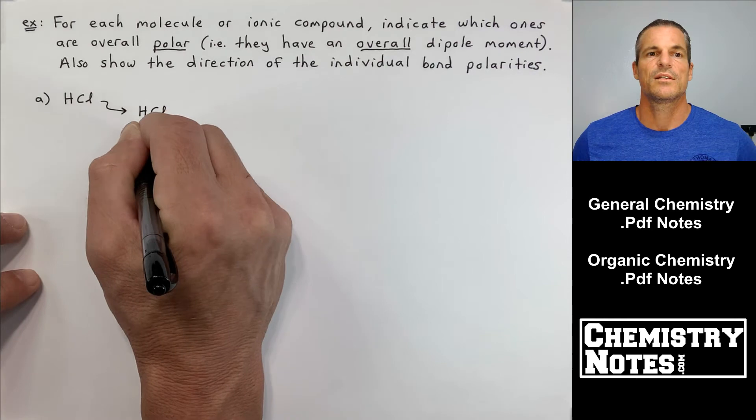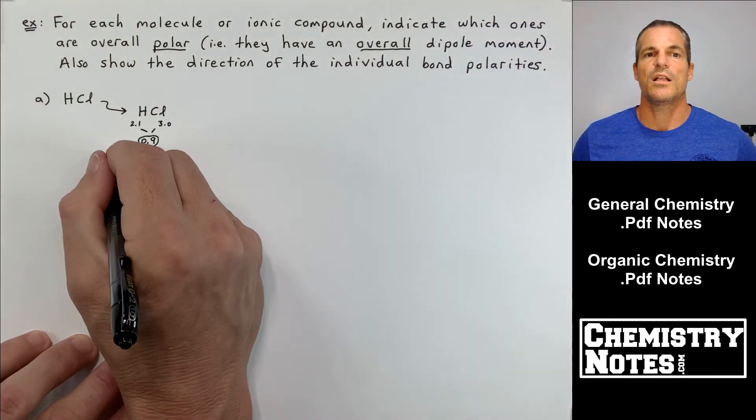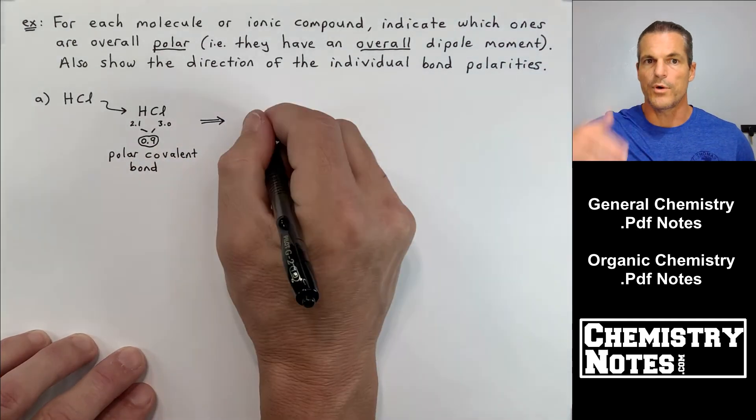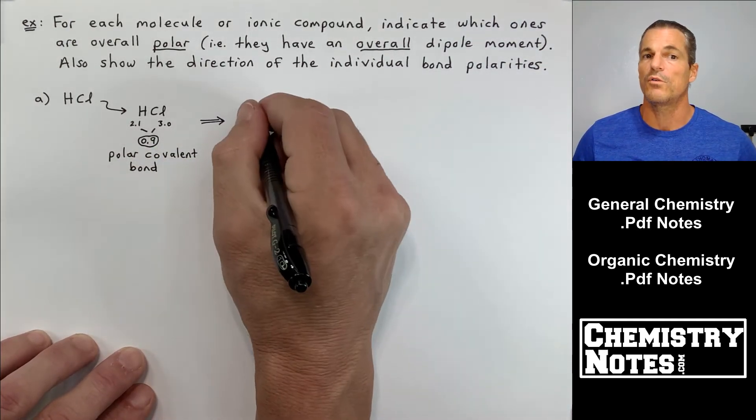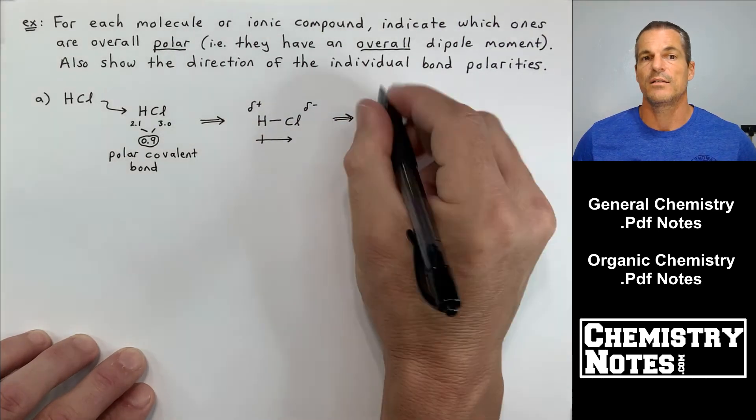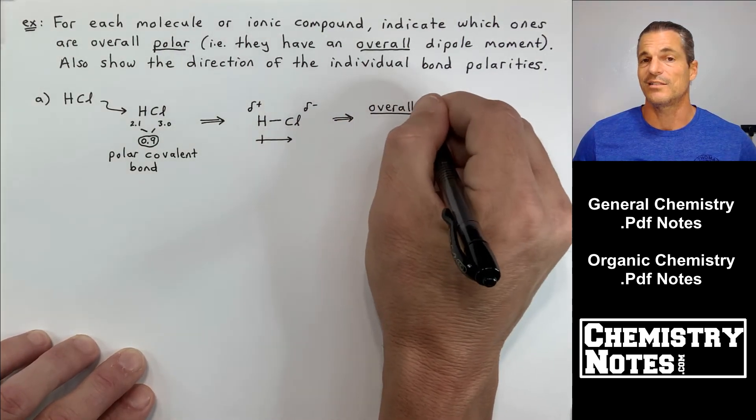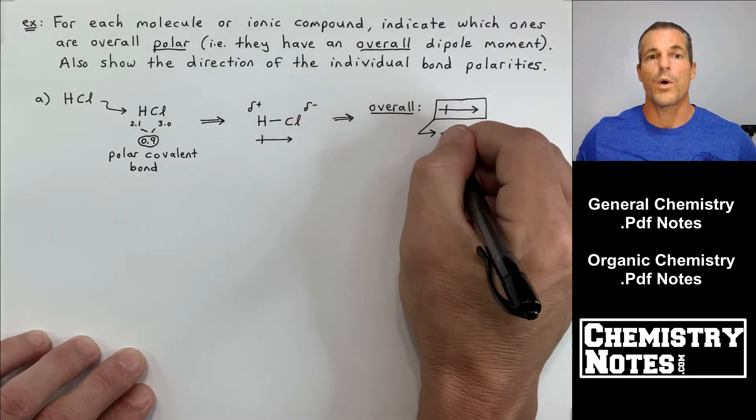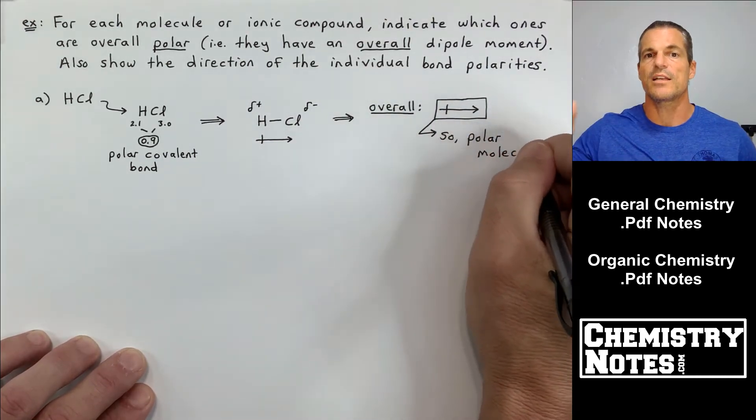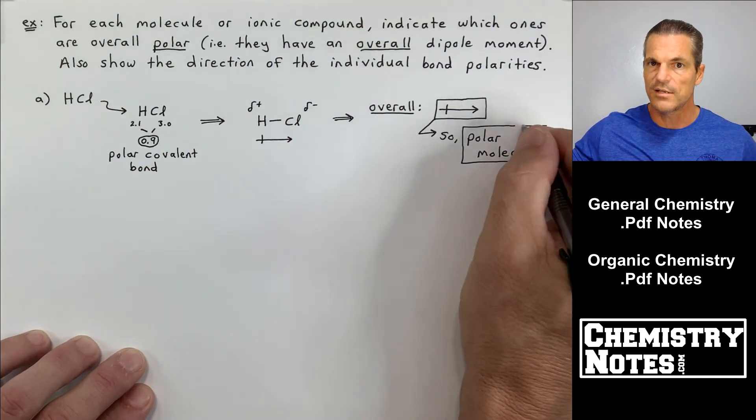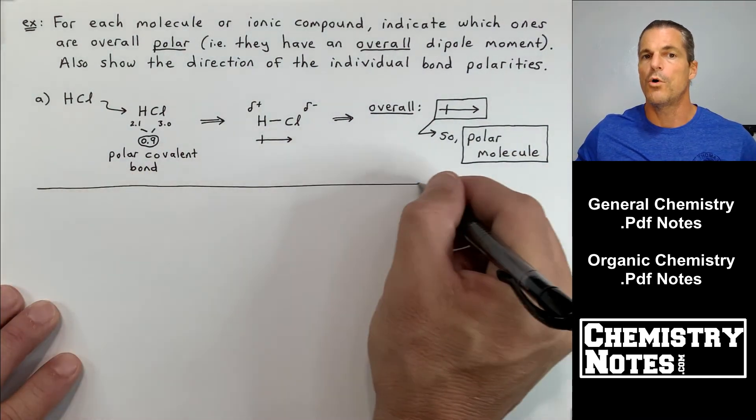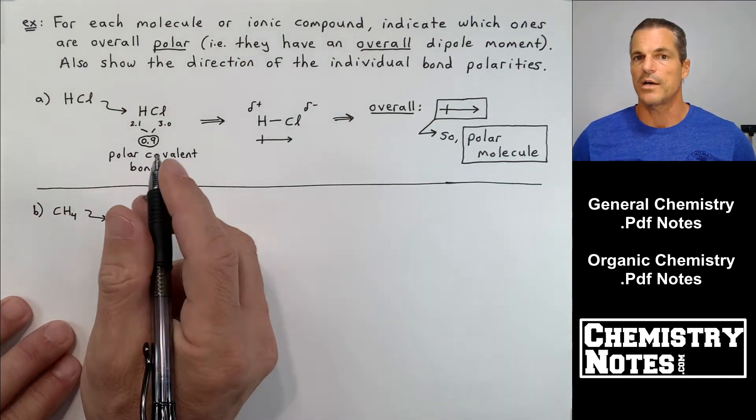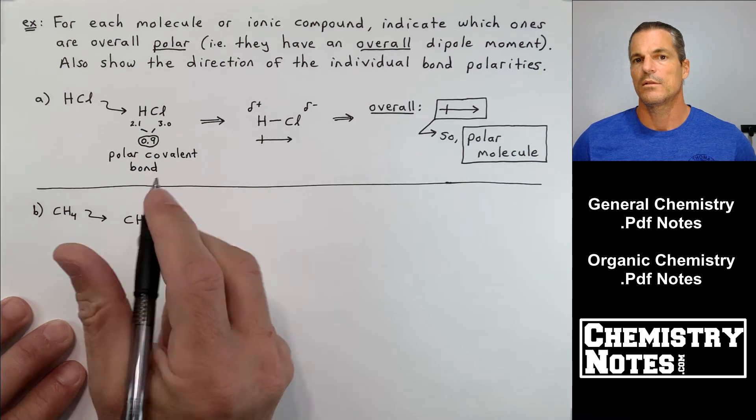Now HCl, this is third time we've seen this. H is 2.1, Cl has electronegativity value of 3.0. The difference is 0.9. If you look at the chart, 0.9 falls in the range of polar covalent bond. And in this case, HCl drawing the bond is like drawing the entire molecule. So this is an easy one. Overall, my polarity goes to the right as far as drawing my dipole moment towards the more electronegative atom Cl.